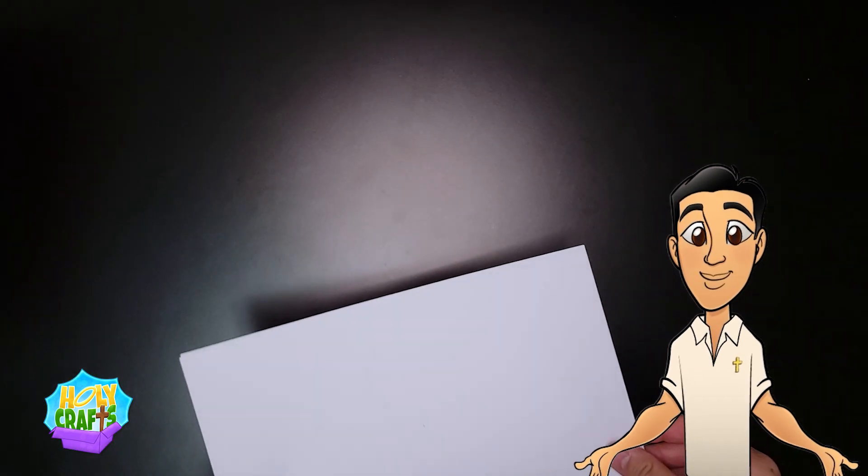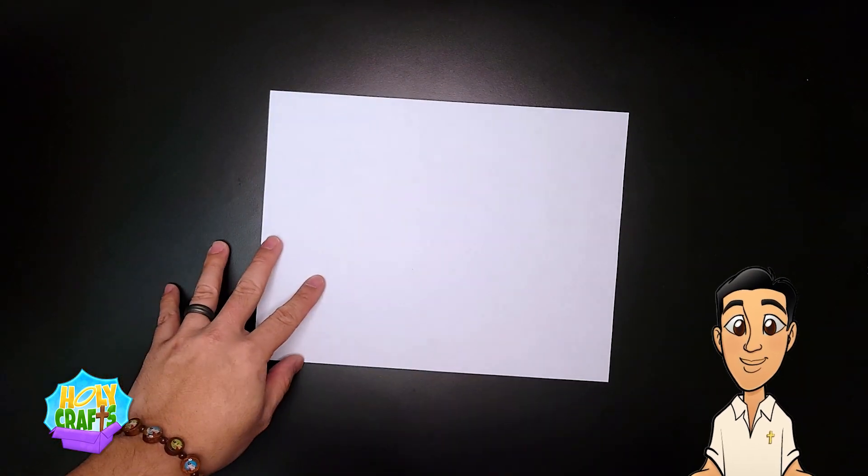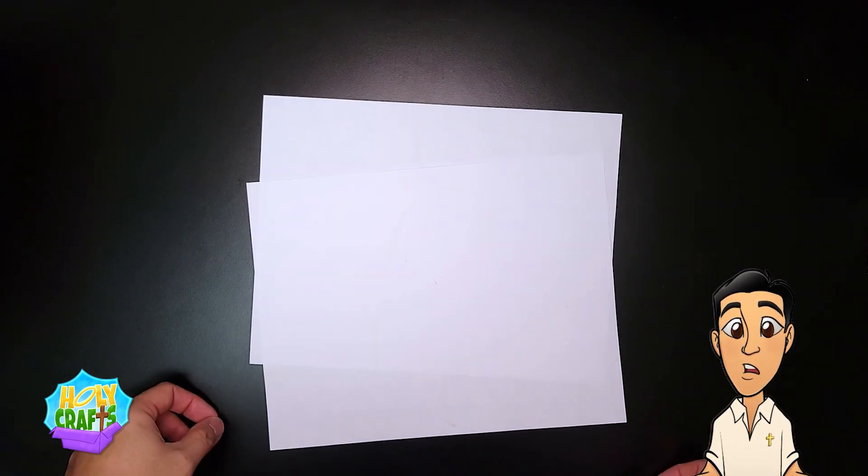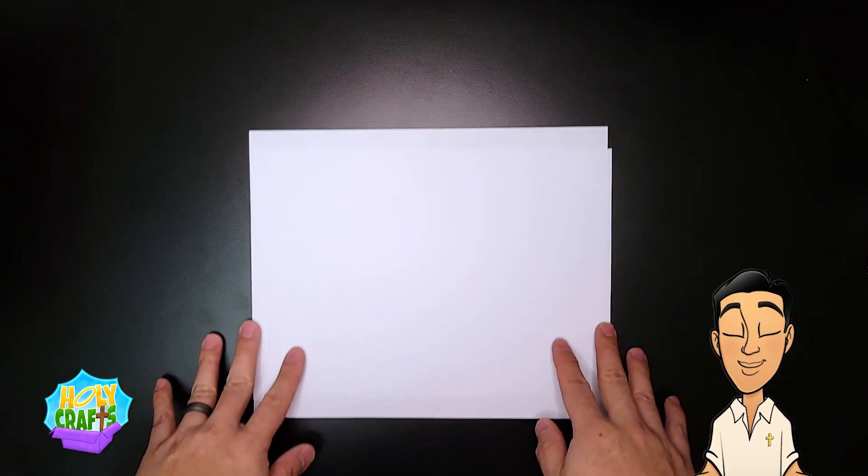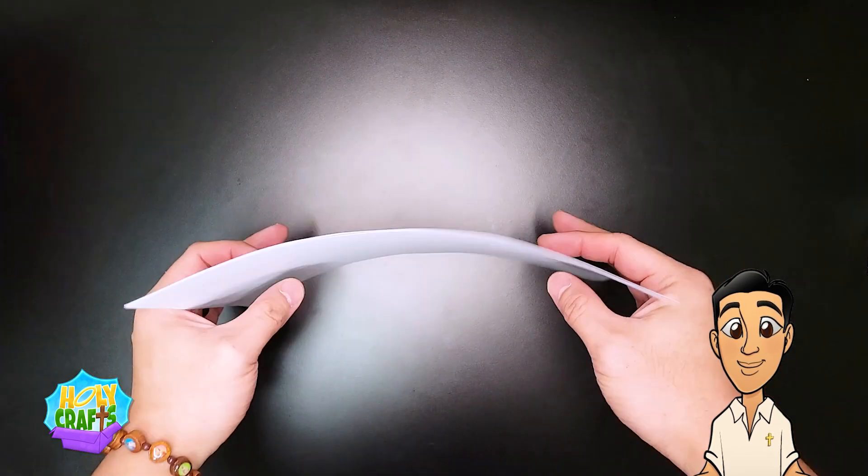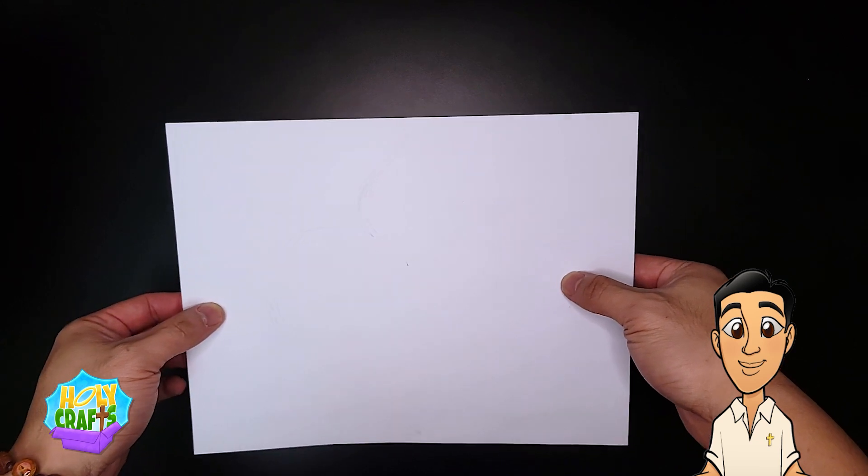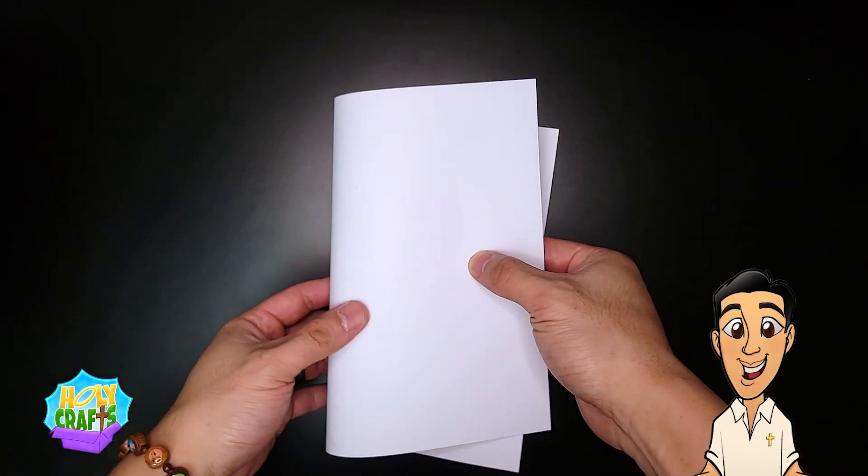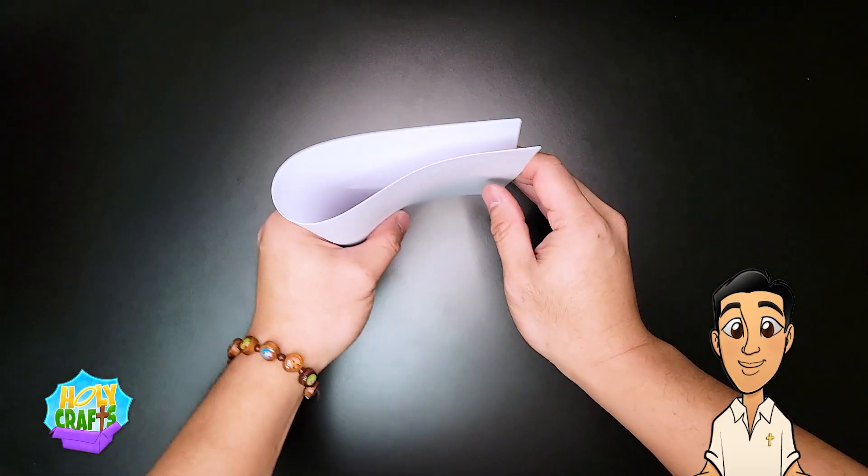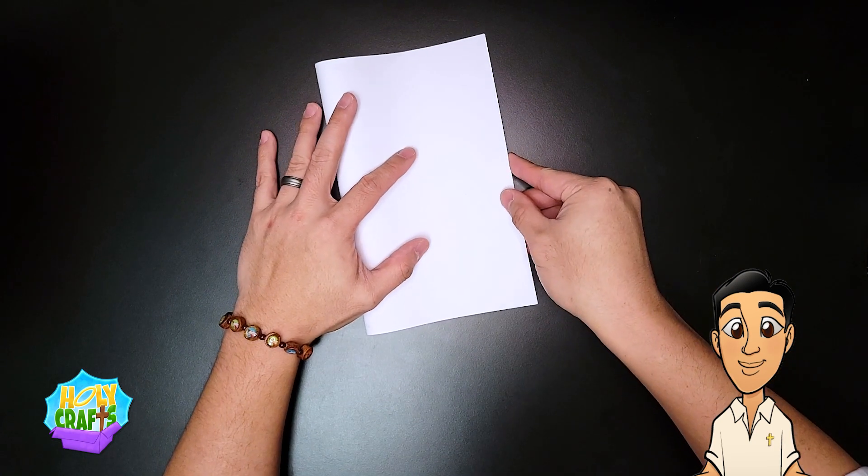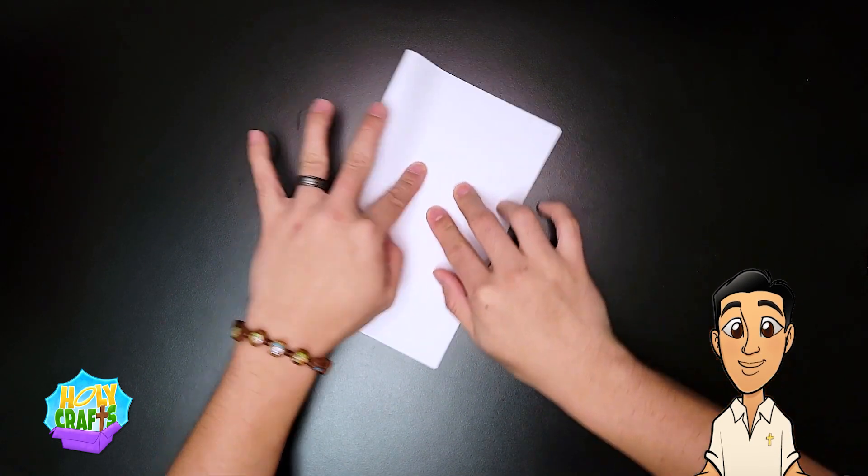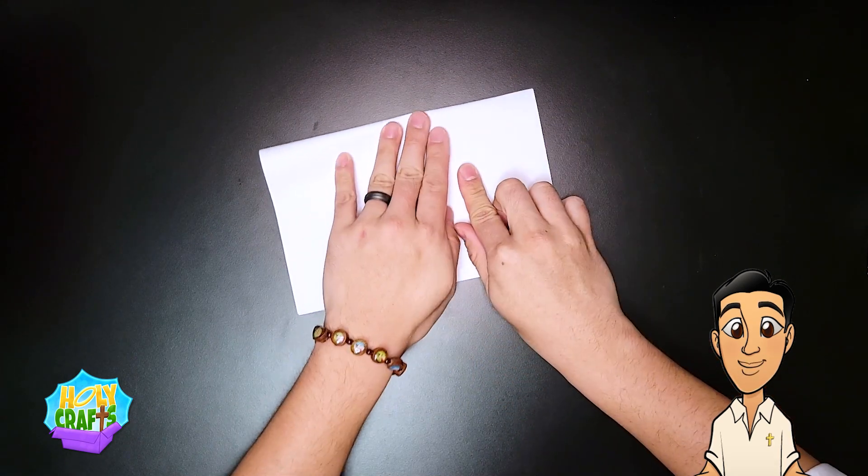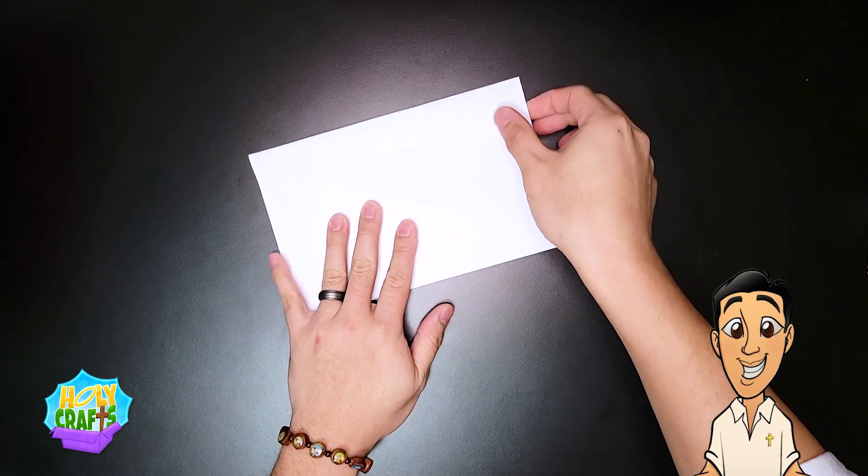All right, so we're going to start with a white piece of paper, and instead of just one, we're going to use two. Now we're going to make sure they're both lined up, and we're going to fold both right in the middle, but we don't want to crease it too much.